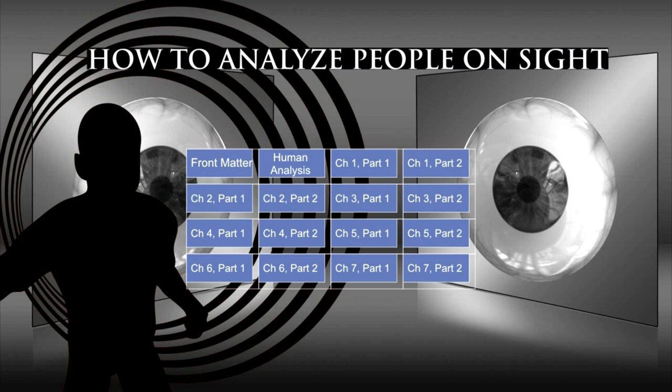Preface to How to Analyse People on Sight. This is a LibriVox recording. All LibriVox recordings are in the public domain. For more information or to volunteer, please visit LibriVox.org. This reading by Carl Manchester, 2010. How to Analyse People on Sight by Elsie Lincoln-Benedict and Ralph Payne-Benedict. Human Analysis: The X-Ray.